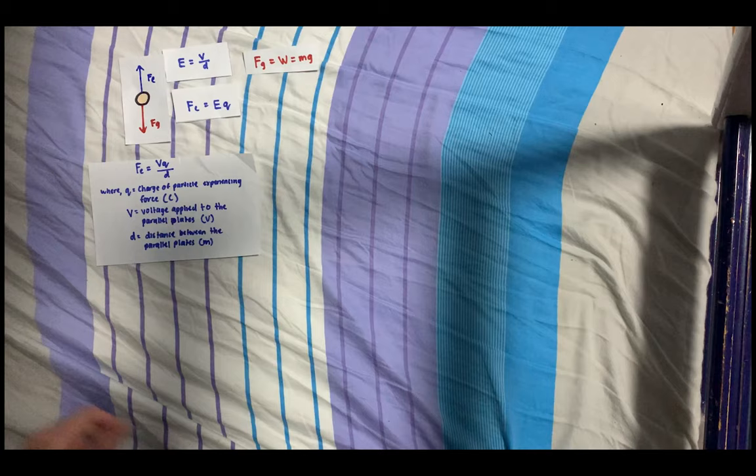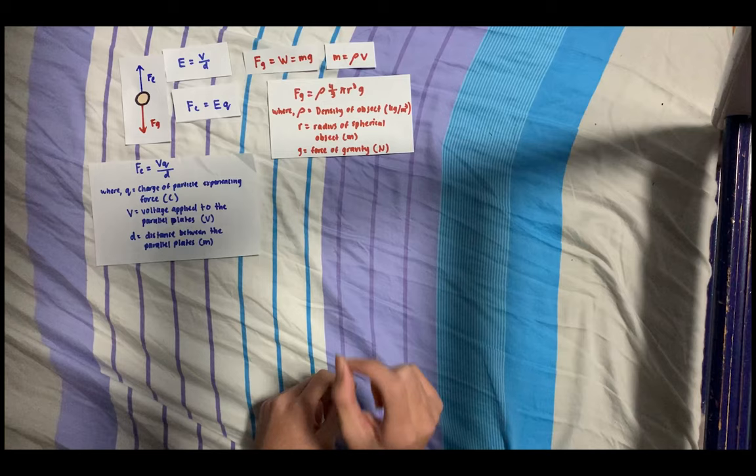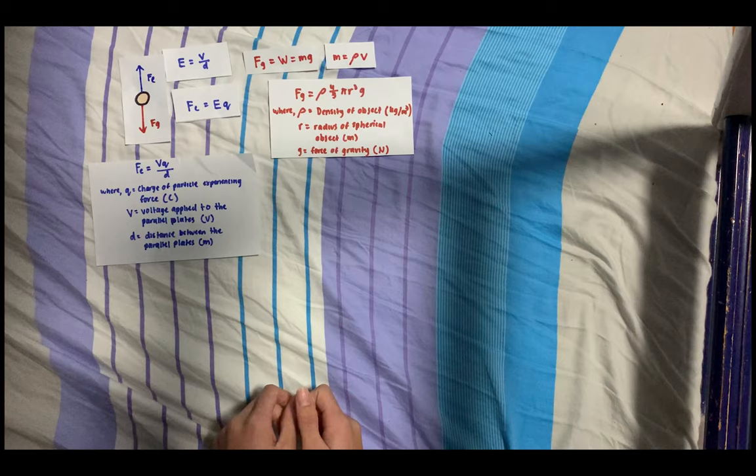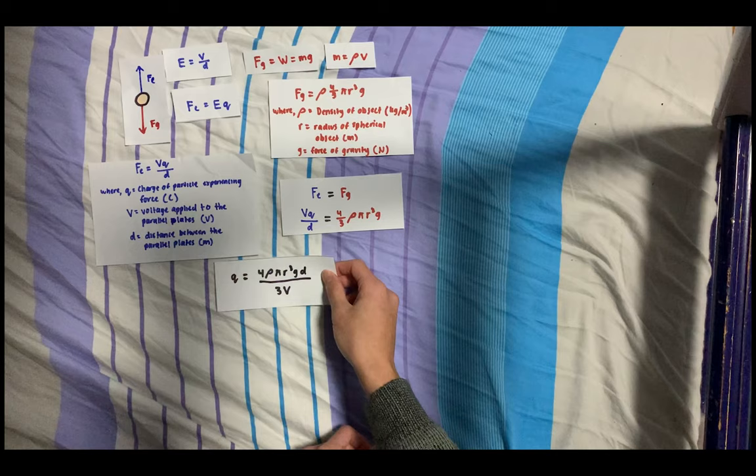By finding the mass of the oil droplet using the equation m = ρV, they get Fg = ρ(4/3)πr³g. Note that they found the density of the oil droplet by measuring a large quantity of oil, and the volume by assuming perfect spherical drops, hence using the volume of a sphere formula. Since the electric force equals the gravitational force, they can equate them and get this equation. Since they want to find the charge, they can rearrange to make q the subject.